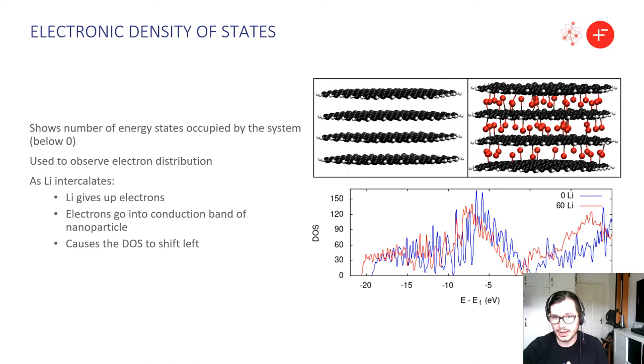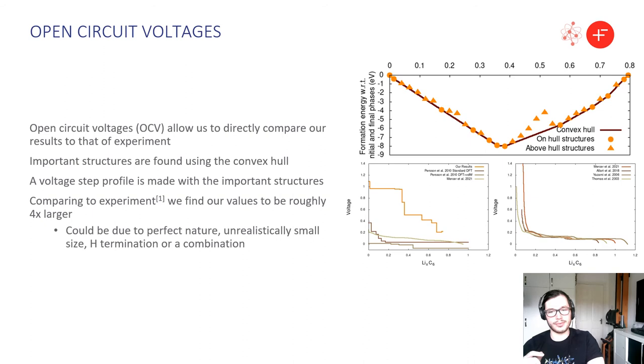Now if we look at our density of states plot here the line in blue represents zero lithium so there's just a completely normal graphite nanoparticle and then as we intercalate and go up to the fully saturated limit, the entire density of states shift left indicating to us that the electrons have indeed gone from the lithium into the graphite nanoparticle.